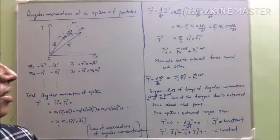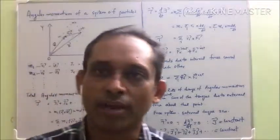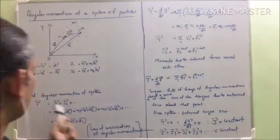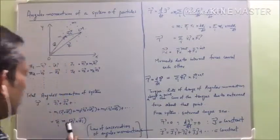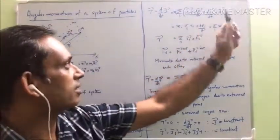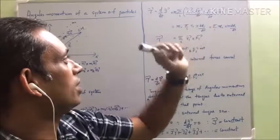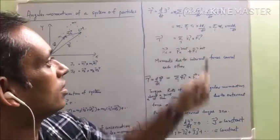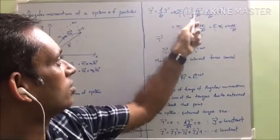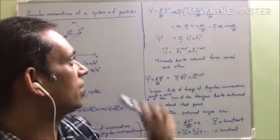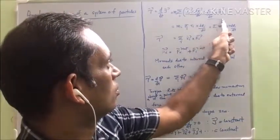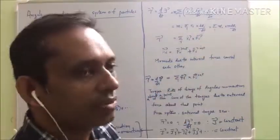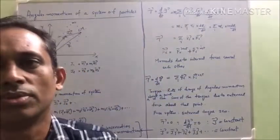Now let us calculate the torque. Torque is the rate of change of angular momentum. You get it by differentiating the angular momentum with respect to time. Applying the product rule: sigma i, mi times (ri cross dvi/dt plus dri/dt cross vi). The second term is zero because dri/dt is vi, so vi cross vi equals zero.